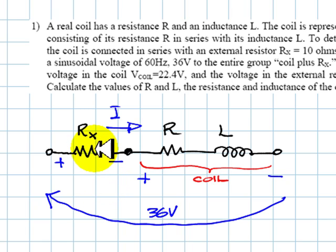We know that the voltage in the external resistor is 20 volts. This is 20 volts. And we know that the voltage in the external coil, this one, is 22.4 volts.